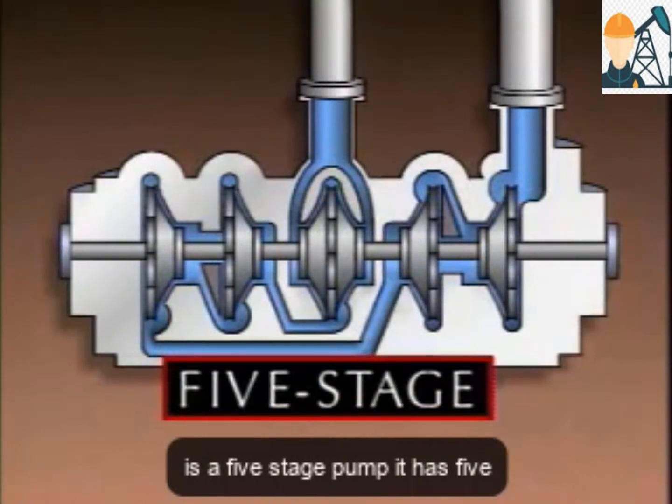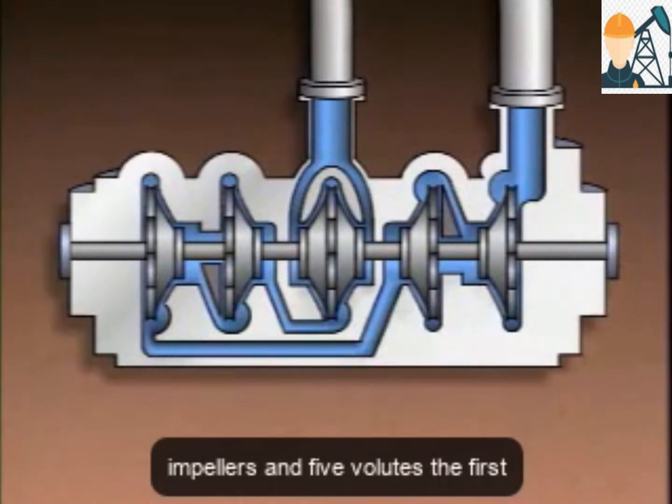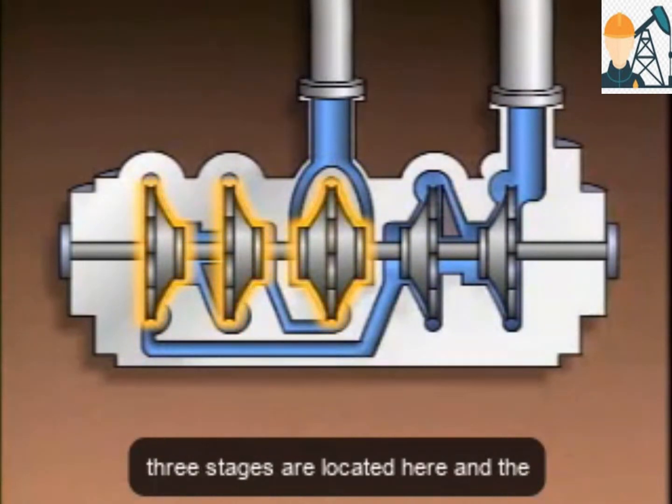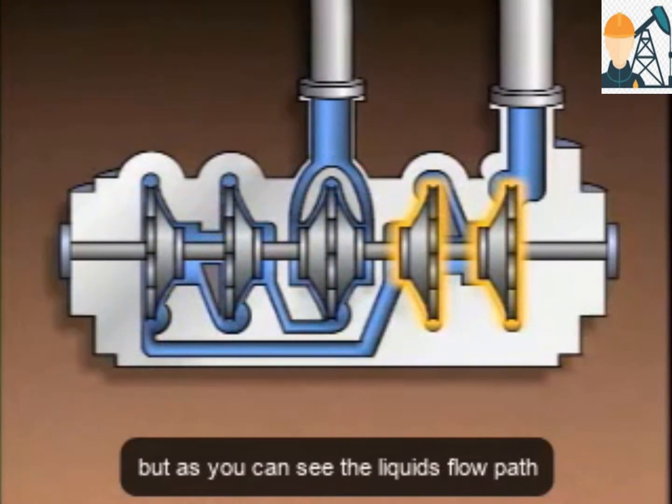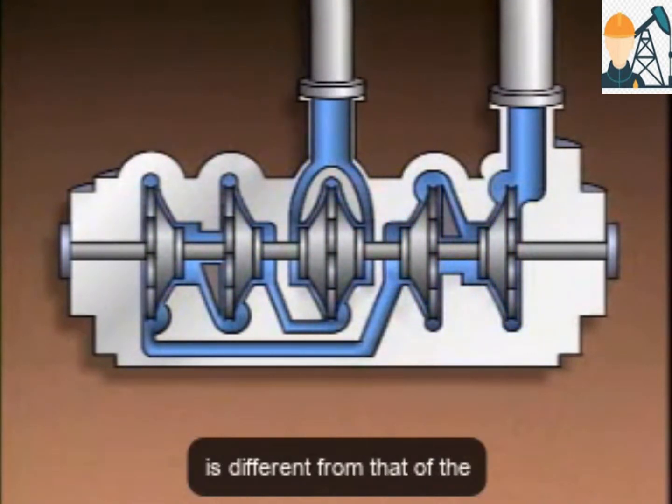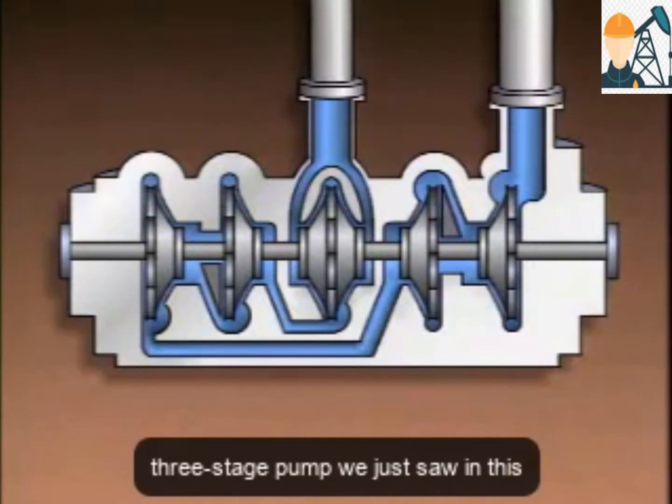This is a five-stage pump. It has five impellers and five volutes. The first three stages are located here, and the fourth and fifth stages are located here. But, as you can see, the liquid's flow path is different from that of the three-stage pump we just saw.